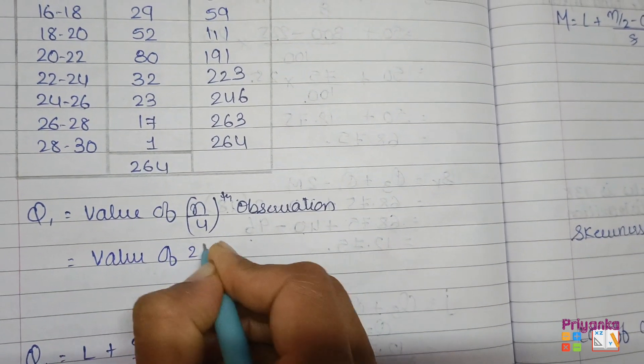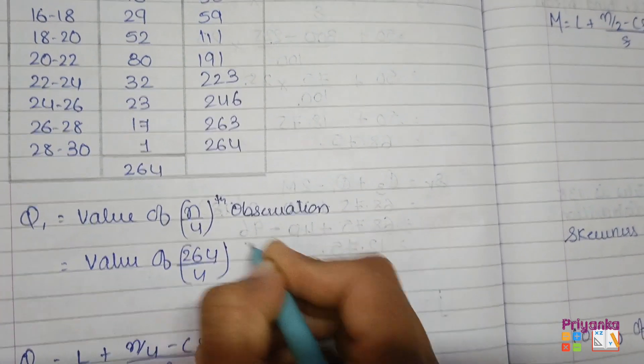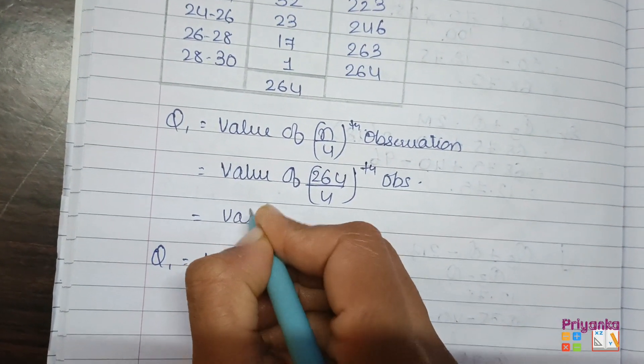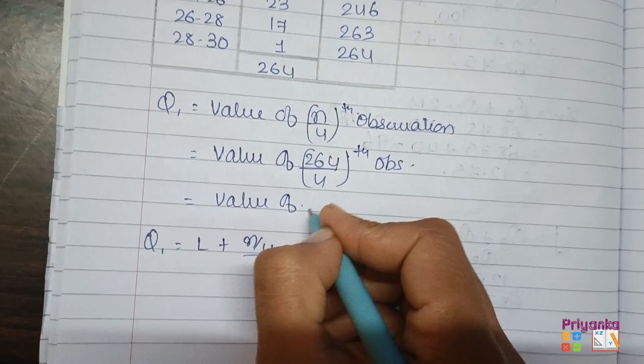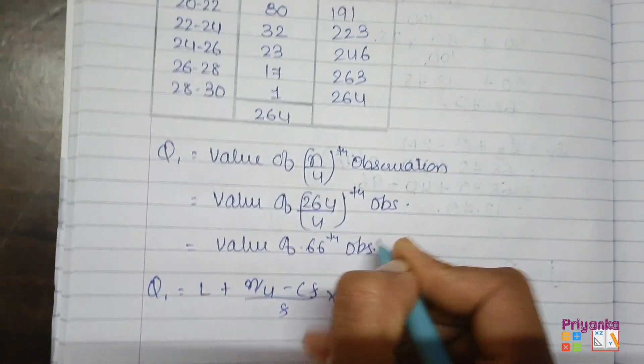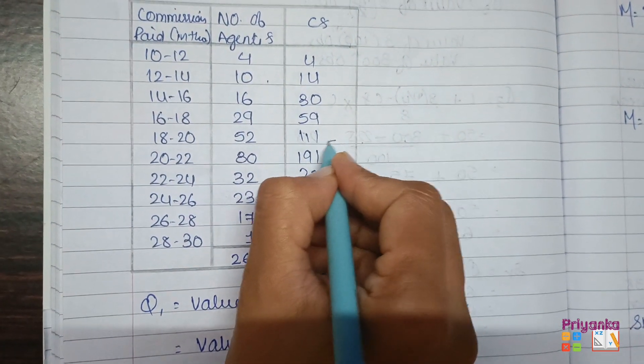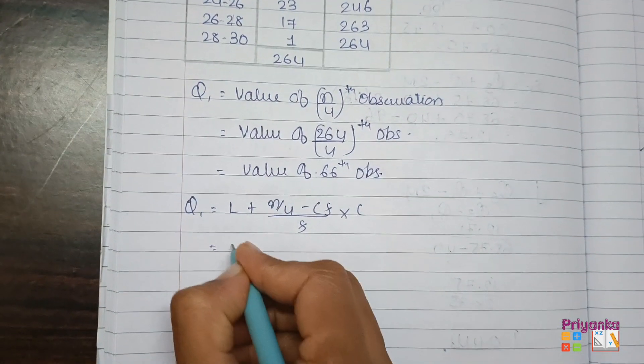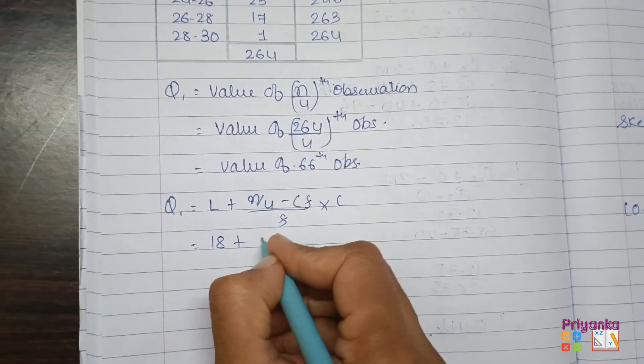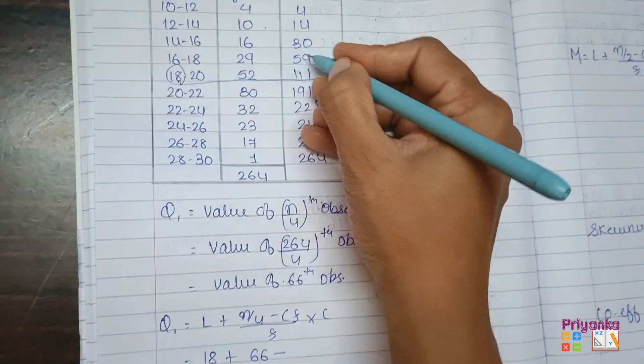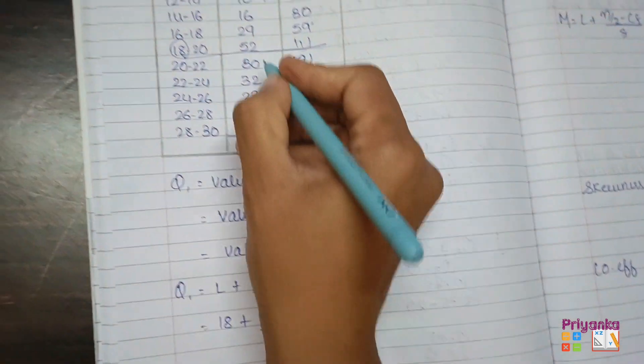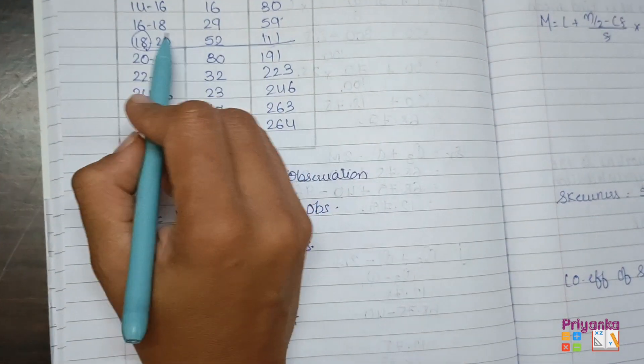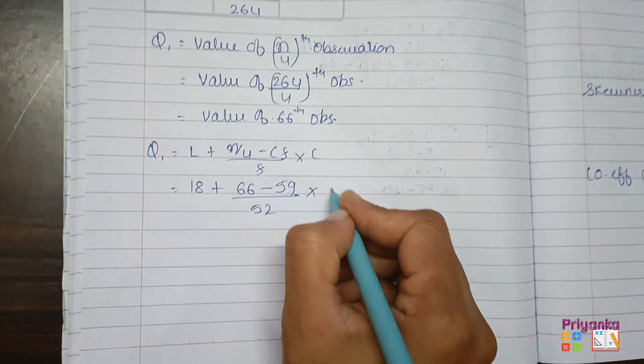N, which is 264 divided by 4th observation, which is value of 66th observation. So out of CF, 66 will come over here. As it is exclusive class, we can take directly 18 in the lower boundary point. And N upon 4, that is 66, CF that is 59, divide by frequency, that is 52, and the class length, that is 18 minus 20, will be 2.